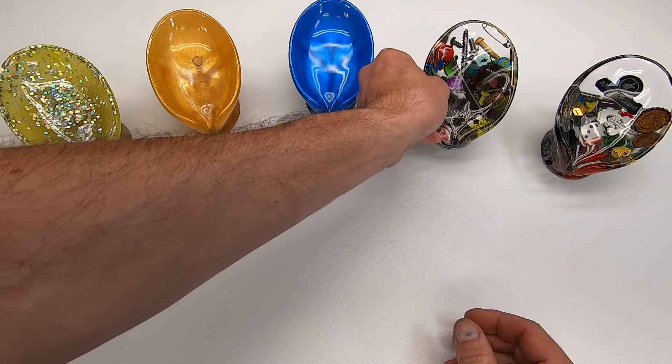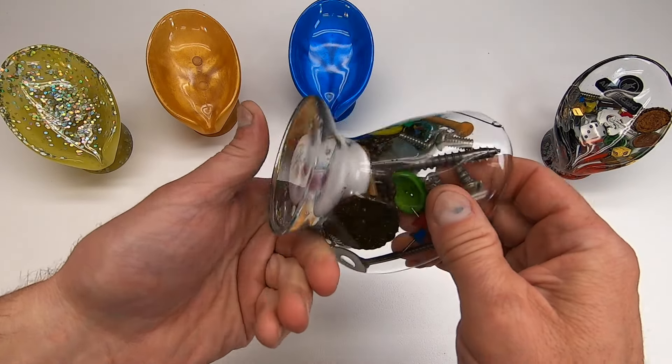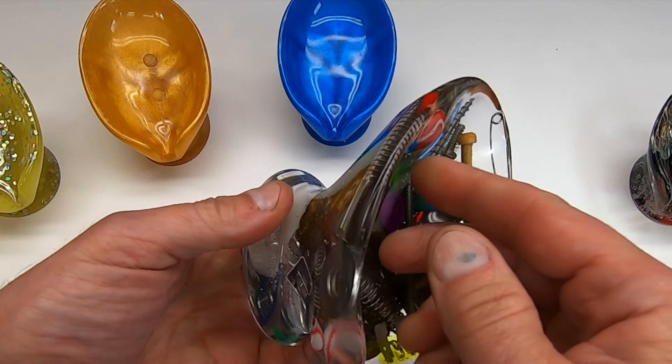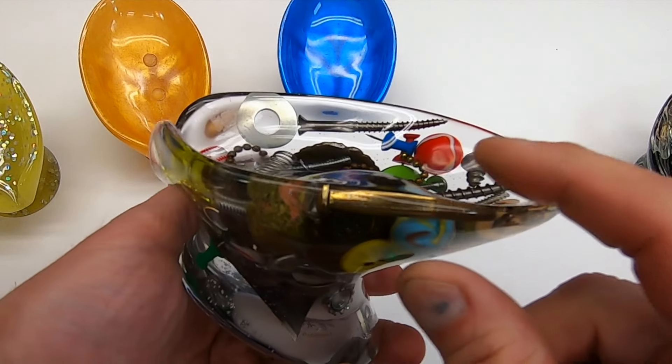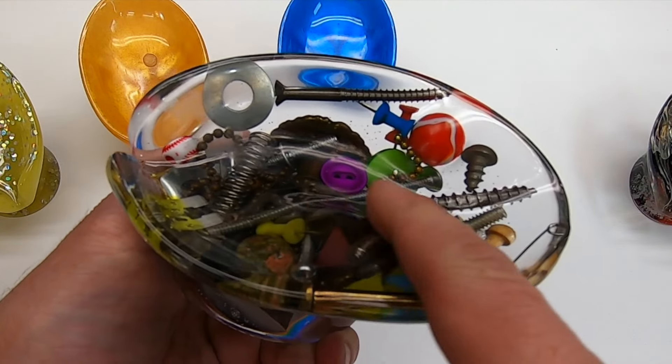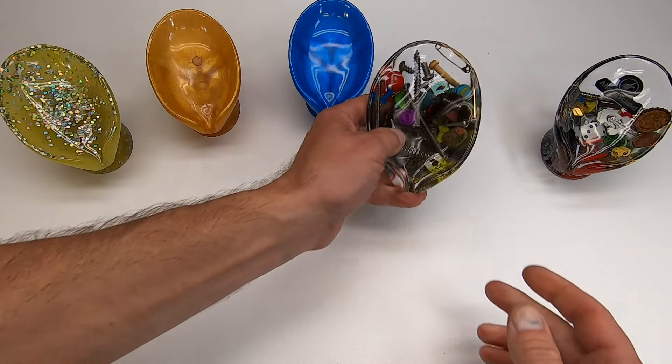For the fourth soap dish, I thought it would be a fun idea to place hardware and other items inside the clear epoxy. I love the concept, but I did make a mistake on the execution. When I was placing objects into the mold, I pushed them in too hard, and when it dried, there was a bulge. It's still usable, but not perfect.